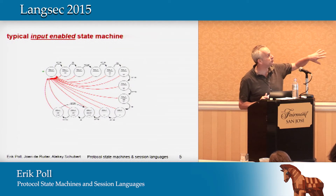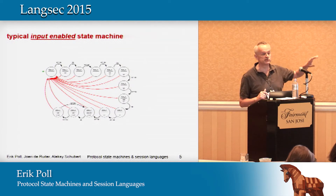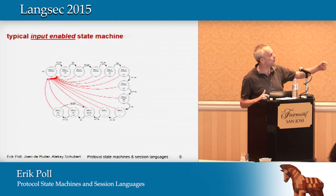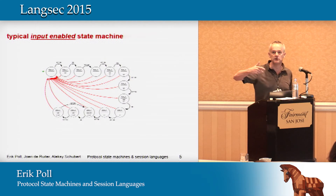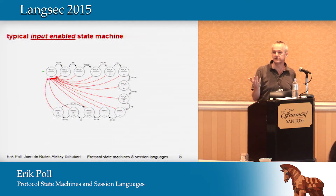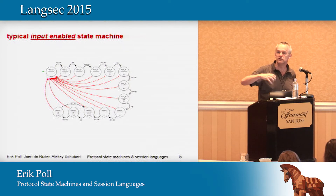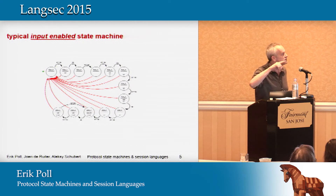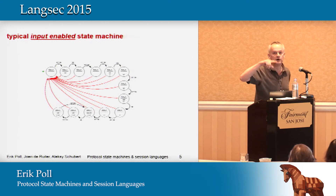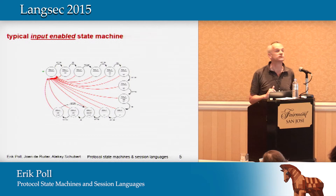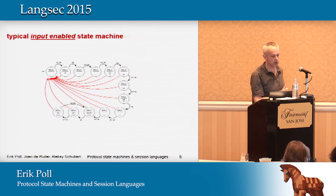This is a pattern you typically see in input-enabled state machines: you have a normal flow, and then all these red arrows which are error transitions. A typical response is that if you get an error, you jump back to the beginning of the session. Another pattern is that you jump to some error state and never return from it. Or you'll see examples where you basically ignore the funny messages.